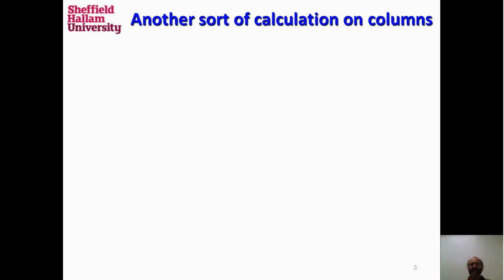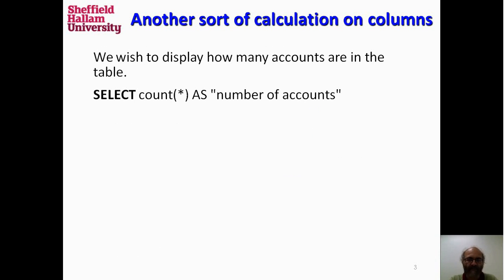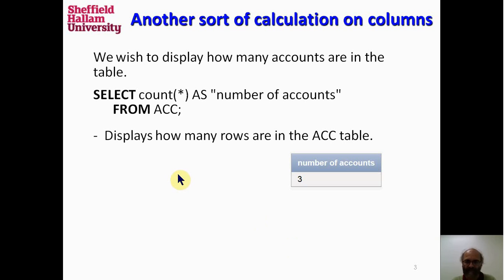There is a different kind of calculation on columns. And that calculation is to summarize the contents of a table. For example, one of these summary functions is COUNT. COUNT works to give a count of the number of rows in a table, like this one.